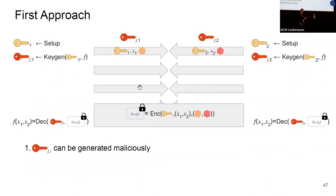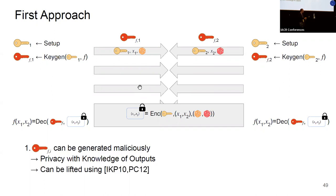Regarding the first problem of maliciously generated functional key shares: the security definition of the combiner guarantees that the only thing that can happen with malicious key shares is that an honest party might receive a bad output, but the adversary cannot learn more about underlying inputs. This corresponds to a notion in MPC called privacy with knowledge of outputs. Compilers exist that turn MPC protocols secure with this property into fully secure protocols while preserving round and communication complexity.